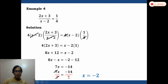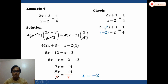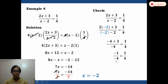To check, we substitute x equals negative 2 into (2x plus 3)/(x minus 2) equals 1/4. This gives (2 times negative 2 plus 3) over (negative 2 minus 2), which is (negative 4 plus 3) over negative 4, giving negative 1 over negative 4. Since both numerator and denominator are negative, this becomes positive 1/4 equals 1/4. Confirmed.